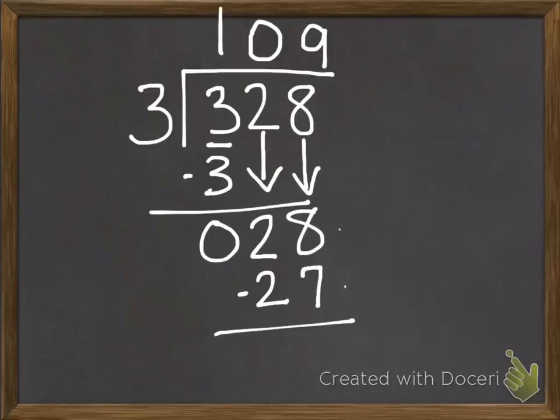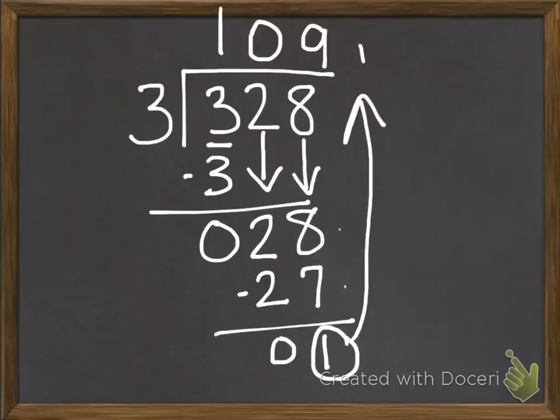Well, 8 minus 7 is 1, and 2 minus 2 is 0. So, you now have one number left over, which is your remainder. So, we're going to bring that up, and we're going to have a remainder of 1. So, the answer to this division problem is 109 remainder 1.